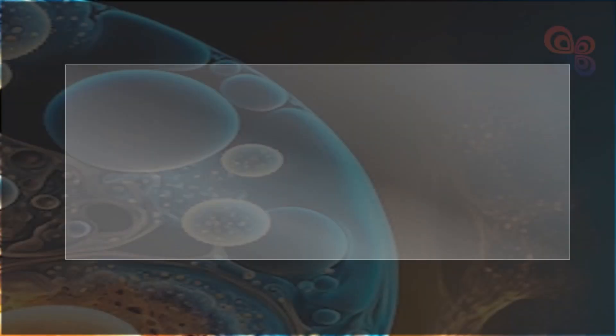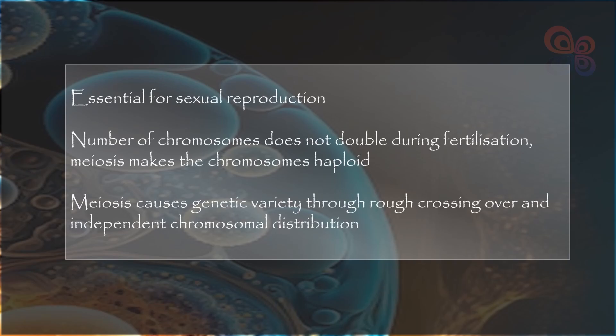Meiosis is essential for sexual reproduction. So that the number of chromosomes does not double during fertilization, meiosis makes the chromosomes haploid. Meiosis also causes genetic variety through crossing over and independent chromosomal distribution. Further variability is provided by the random pairing of gametes during fertilization.